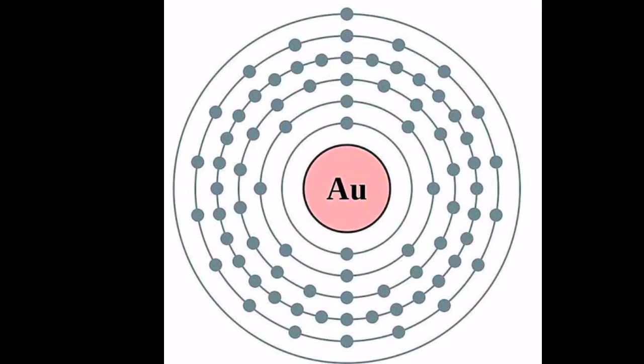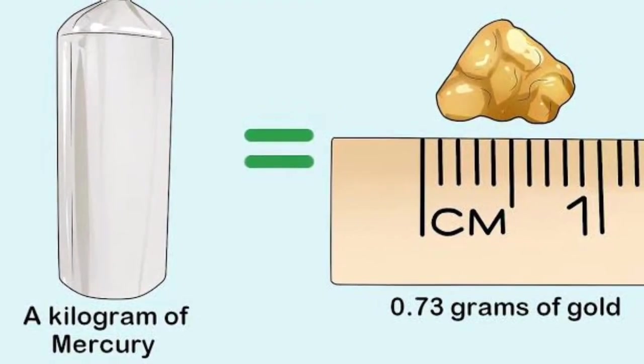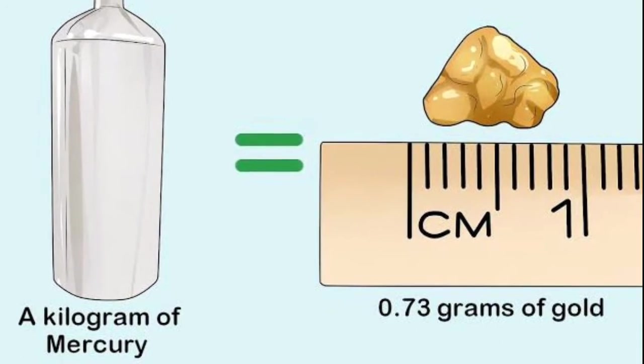Or even better, we can remove one proton from mercury, which has 80, or add one proton to platinum, which has 78, in order to make gold.